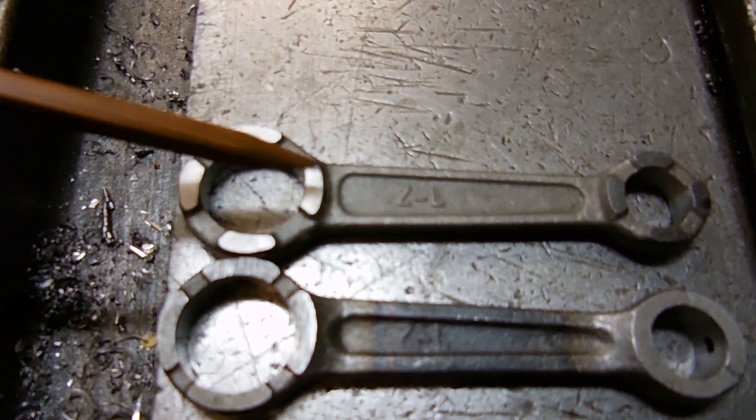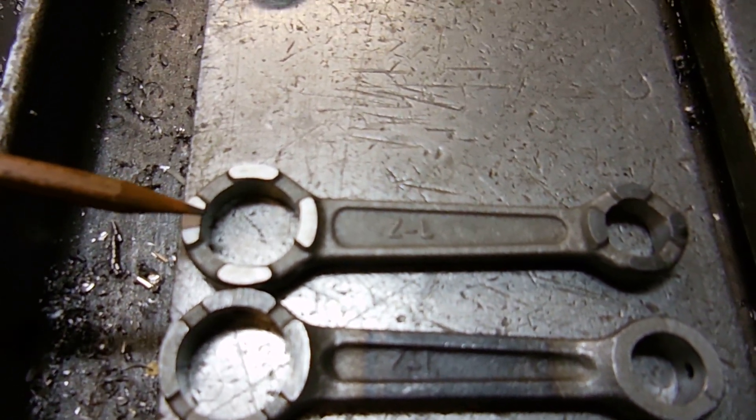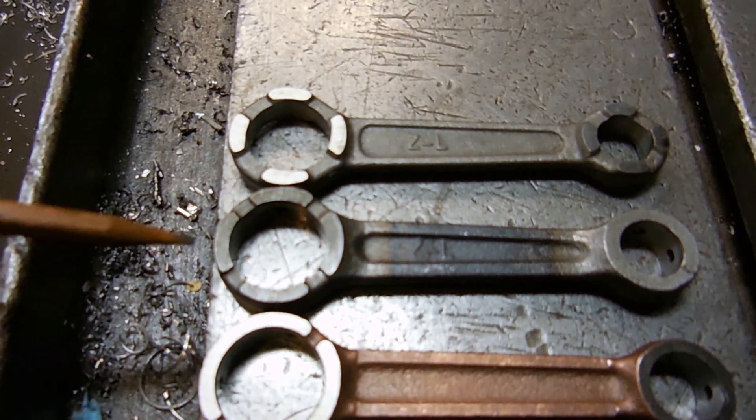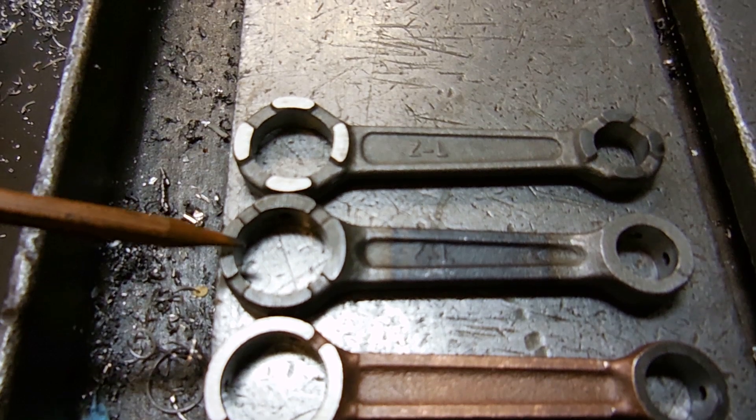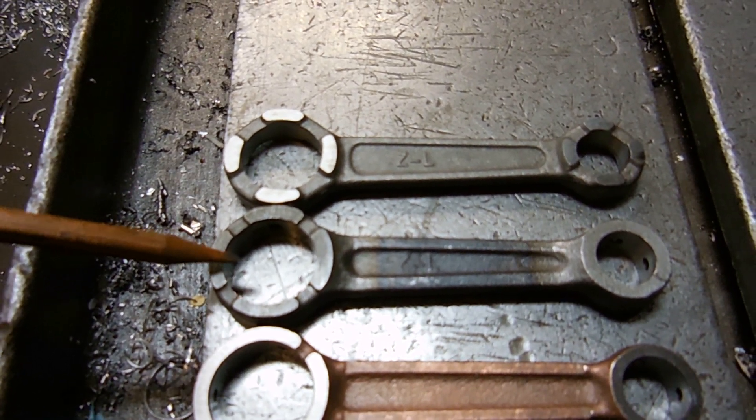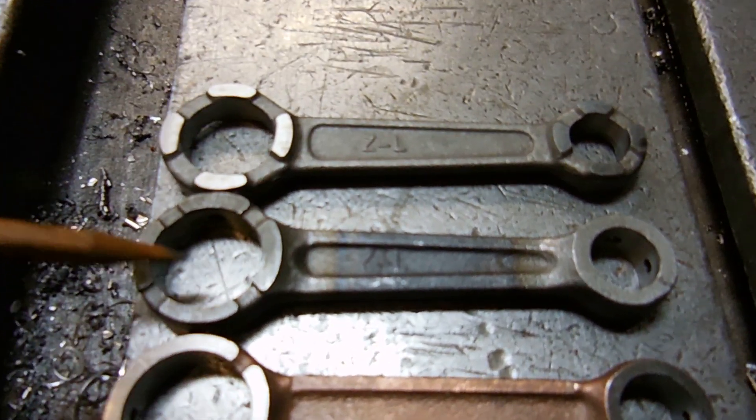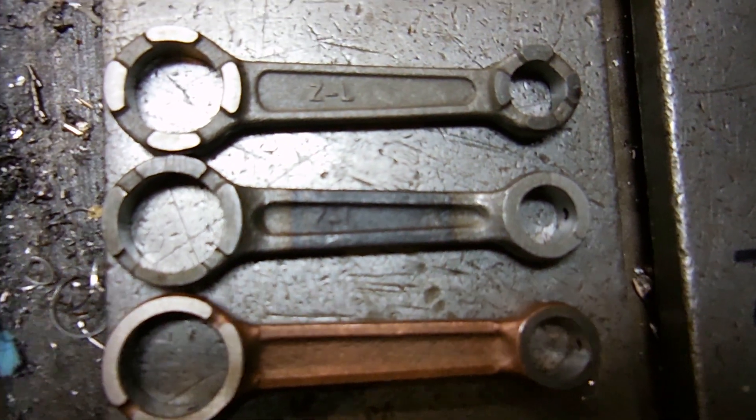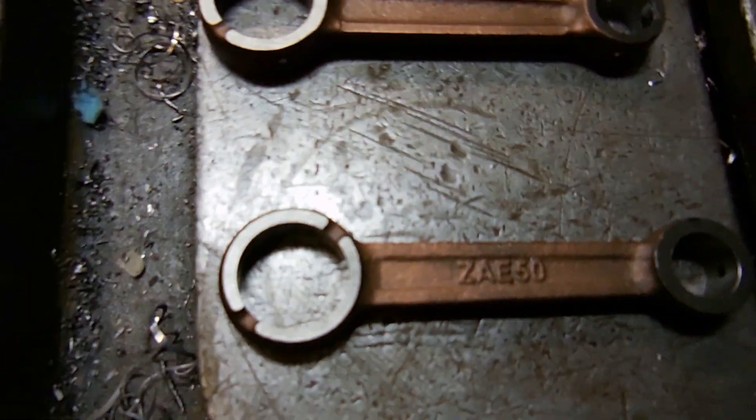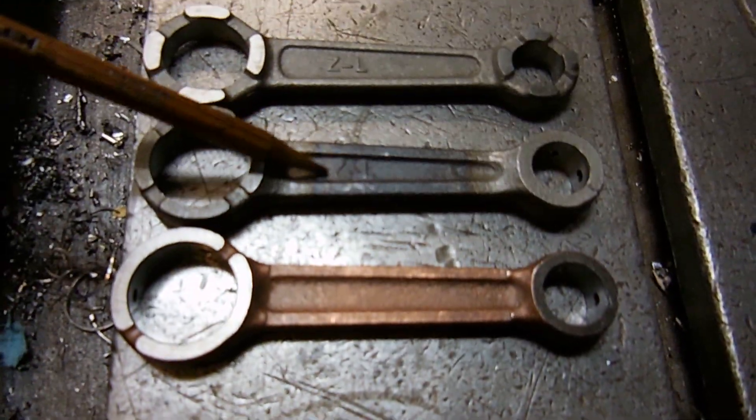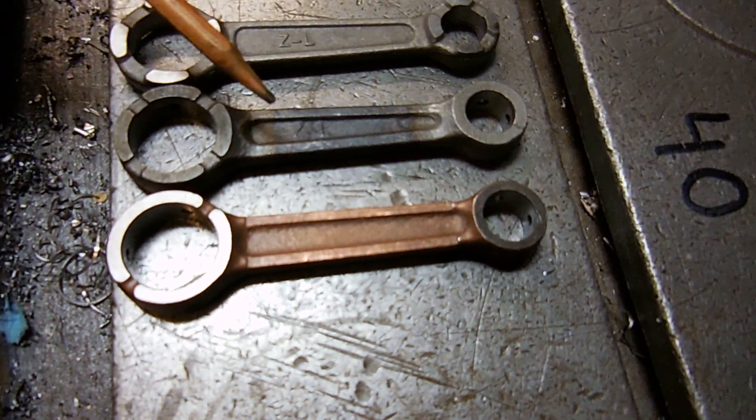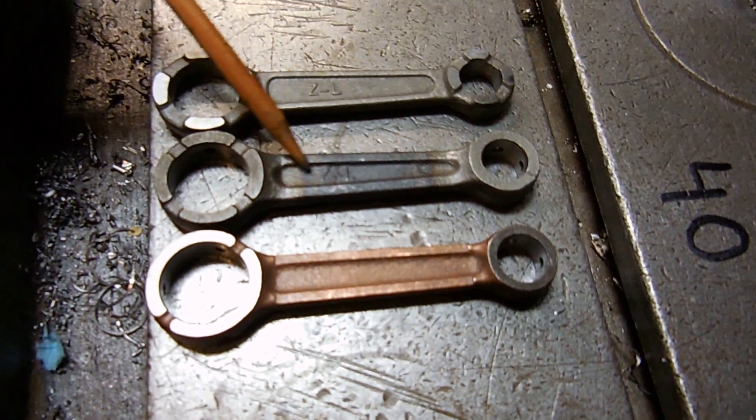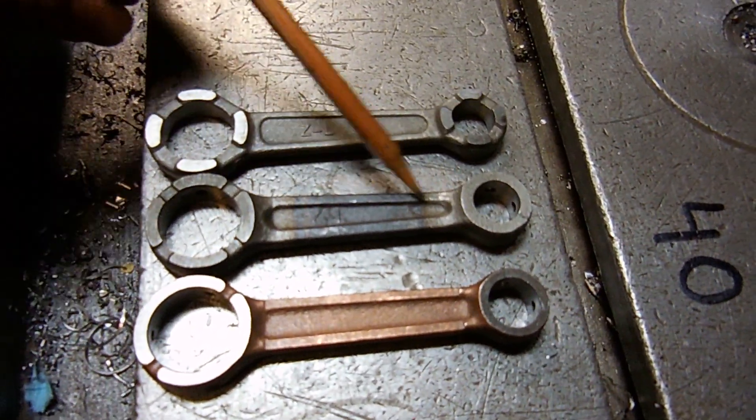Non-caged needle bearing connecting rod, ZL brand. Here's the caged needle bearing type. Another ZL rod. I don't know if you can see that. Yeah, that's a little better. ZL. And, you can see where they, this is important for you to remember. See these heat treat marks? That's from them tempering this area here.